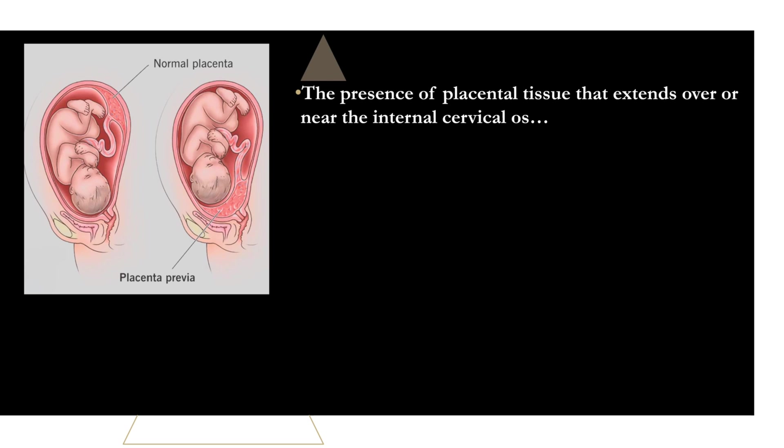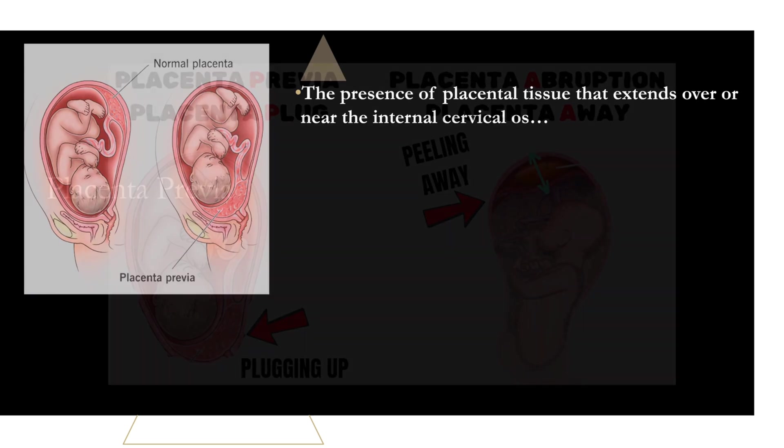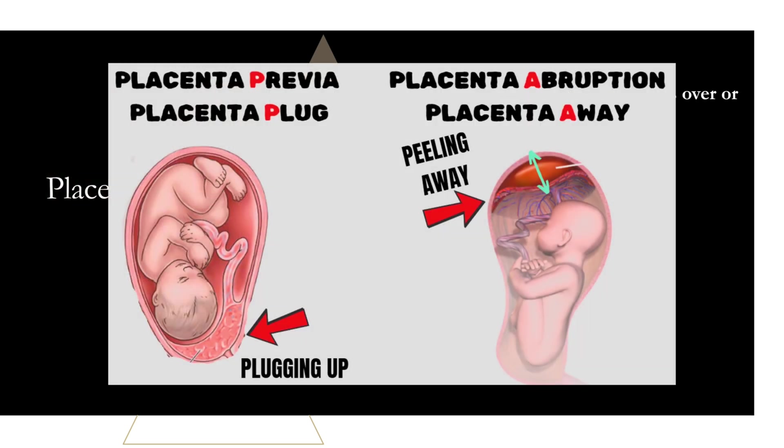A quick mnemonic to differentiate: in placental abruption, the placenta is moving away from the uterus. In placenta previa, the placenta is plugging up the uterus. Placental abruption has an A — placenta moving away. Placenta previa has a P — placenta plugging up the uterus. That's another way to help you remember the differences between the two.